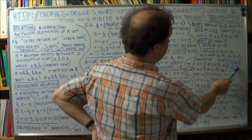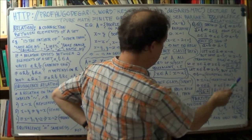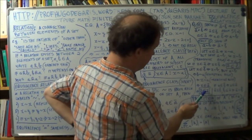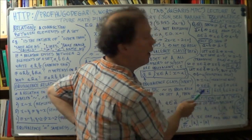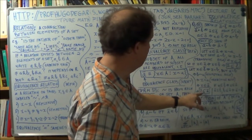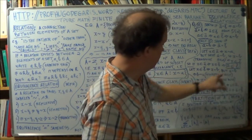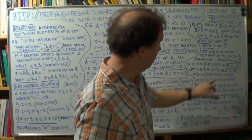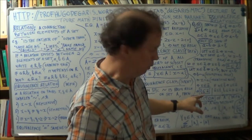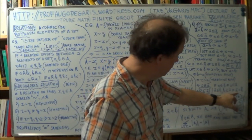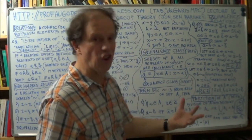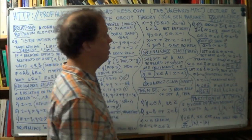A-bar is a subset of B-bar, and we're trying to prove that B-bar is a subset of A-bar. If we can prove both of those — this one and this one — then putting them together, the only way these two can be compatible is that these two sets are equal. So that's the strategy, that's what we're trying to do.